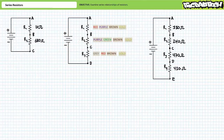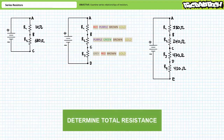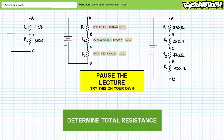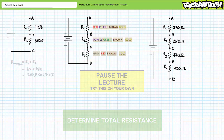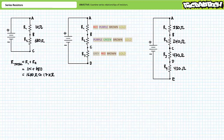Let's put your understanding to the test with a series of example problems. For each series circuit, determine the total resistance seen by the source. Express all answers using proper engineering format to the tens place. For the first circuit, the source sees a total resistance of 1000 plus 680, or 1680 ohms, or more appropriately, roughly 1.7 kilo-ohms.